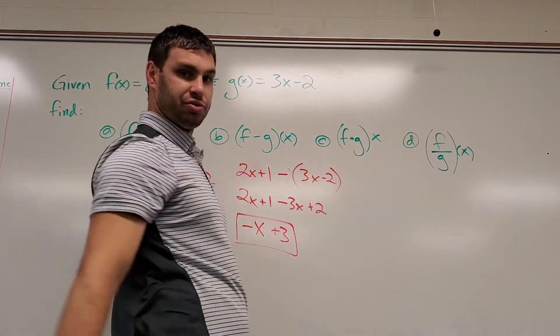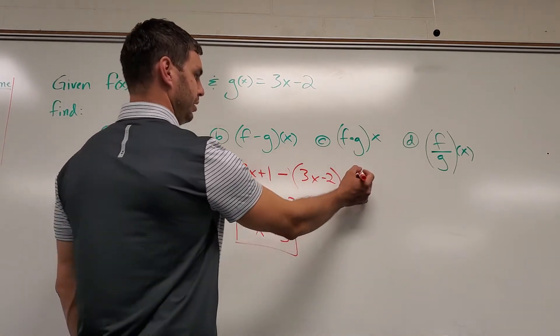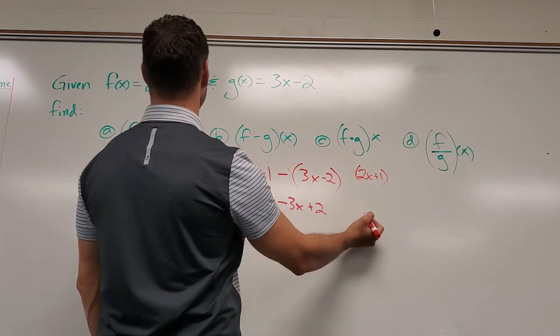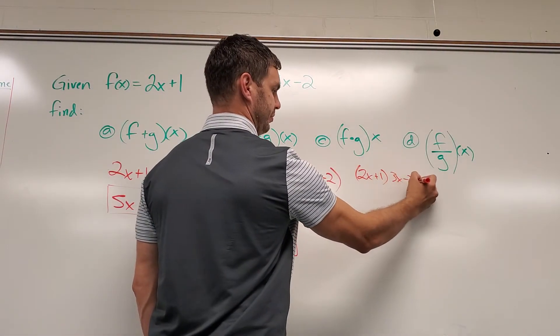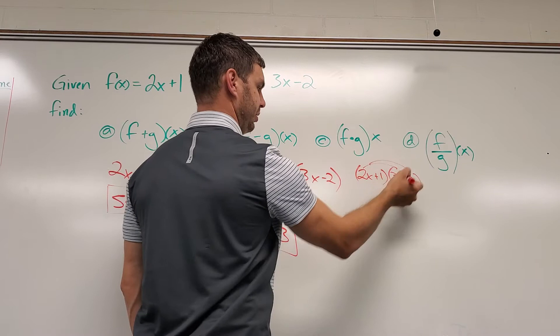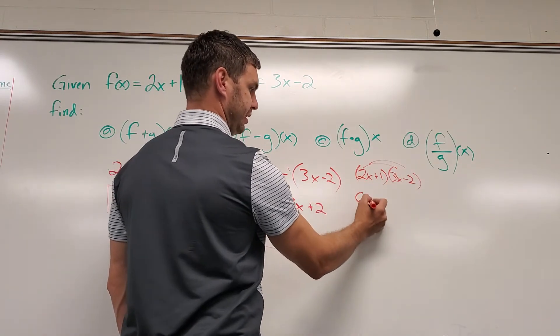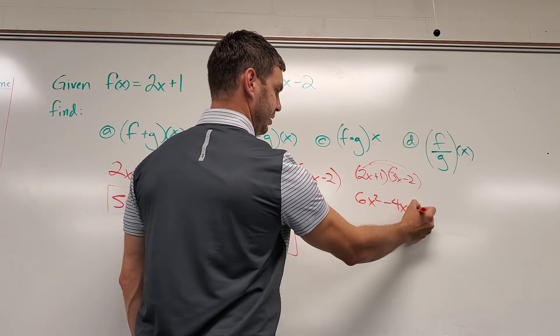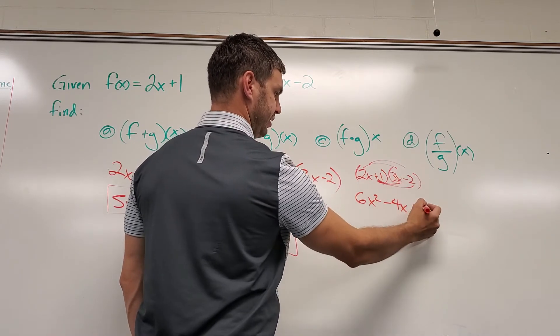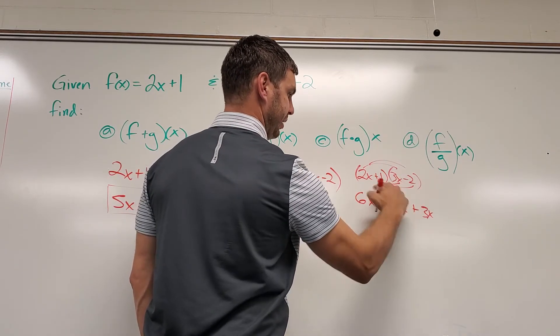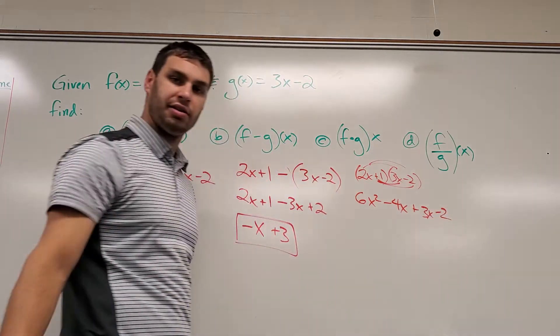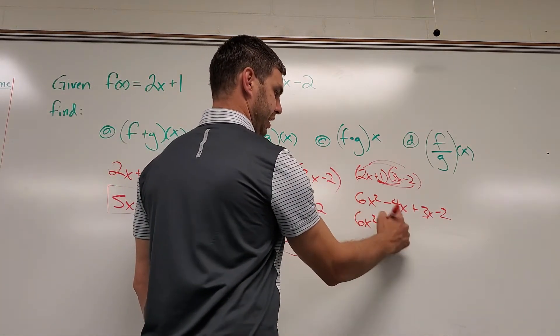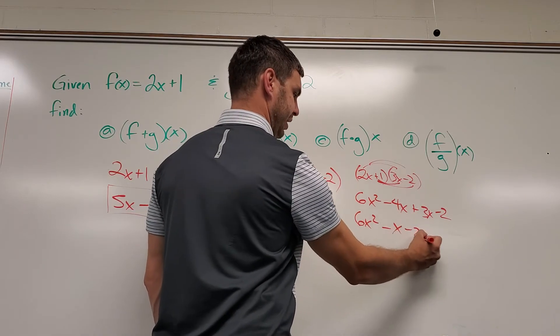f times g of x. f of x was 2x plus 1. g of x is 3x minus 2. So I have to distribute and get that's 6x squared minus 4x plus 3x minus 2. Now I can combine my like terms. So 6x squared minus x minus 2.